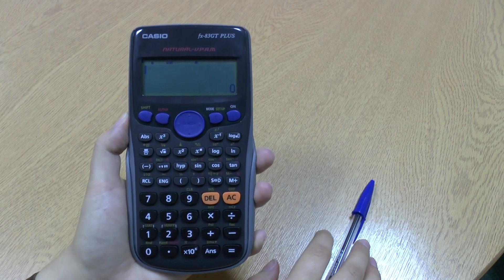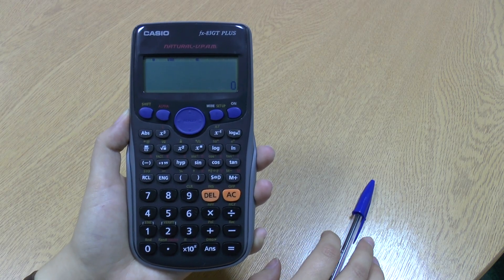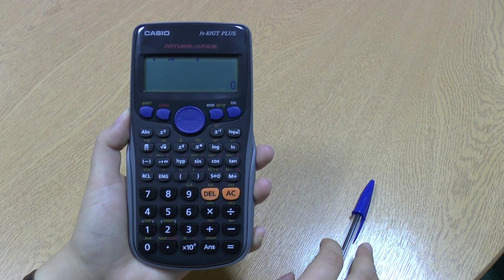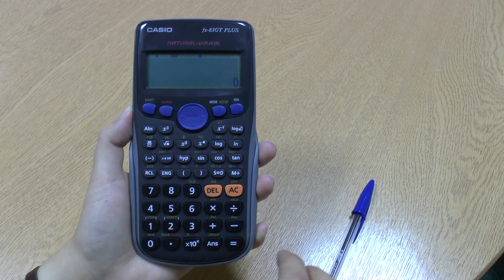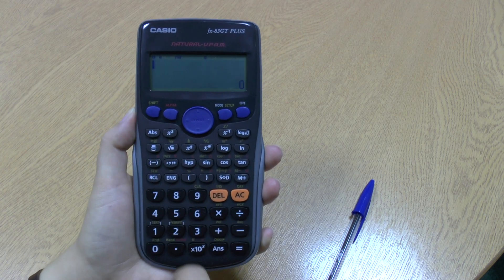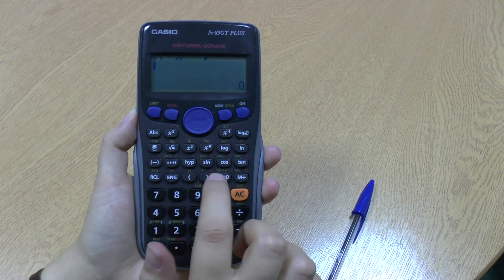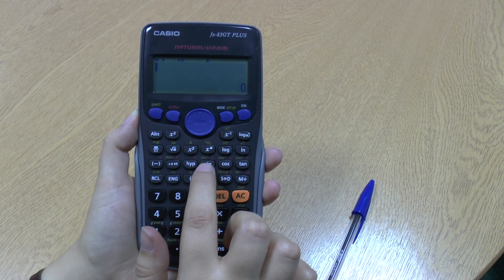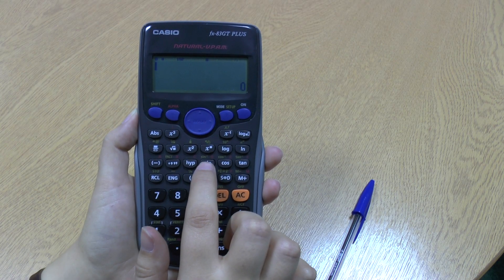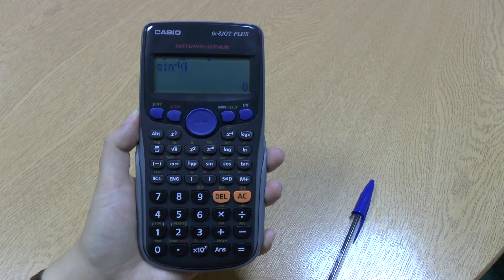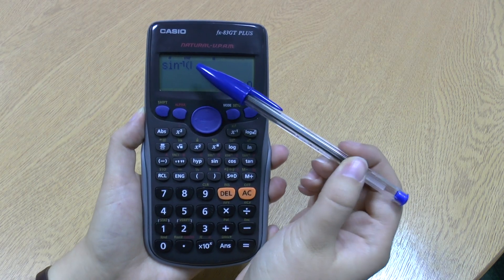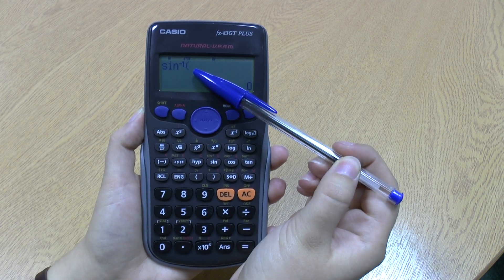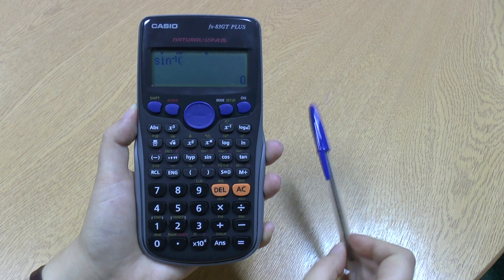So for example, if I want to find sine to the minus 1 of 0.5, I'd go to the shift button, access my second function, then to the sine, because it's got that sine to the minus 1 above it, and it gives us on the screen the sine minus 1 function and an open bracket.